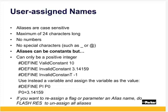Aliases can be constants, but they can only be a positive integer, such as 10. Invalid examples are 3.14159 and minus 1. Instead, use a variable and assign the variable as the value. For example, use pound define pi as P0, and then assign P0 as 3.14159.